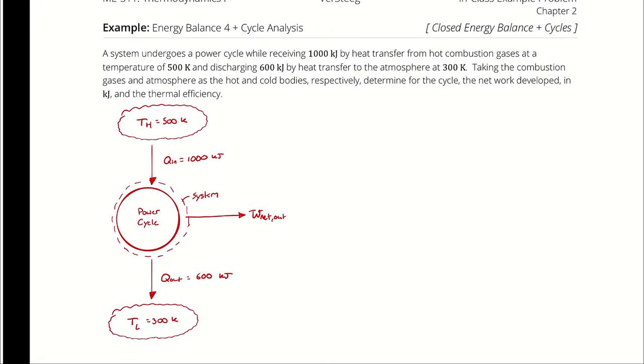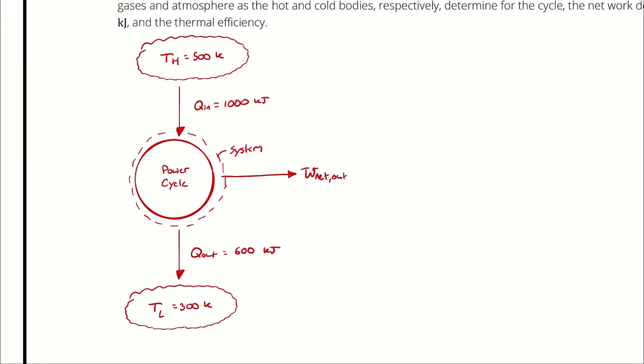Drawing this in the same cycle diagram we used for our definitions of thermal efficiency and the coefficient of performance, I have a power cycle receiving heat at a magnitude of 1,000 kJ and rejecting heat at 600 kJ.